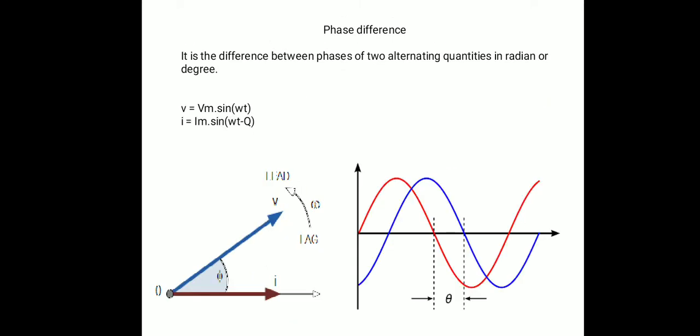Next is the phase difference. It is the difference between the phases of two alternating quantities, measured in radians or degrees. In the waveform diagram, there is a red sinusoidal quantity and a blue sinusoidal quantity, and there is a difference theta between their two phases. Both sinusoidal quantities do not start from the origin — their starting points are different in time — and we measure the difference in phases with respect to their starting points.